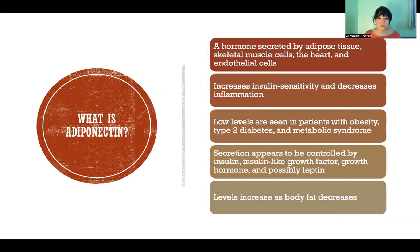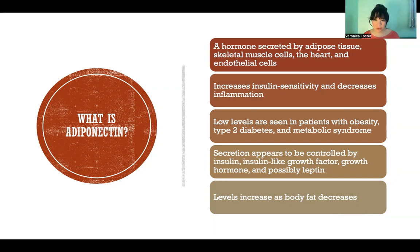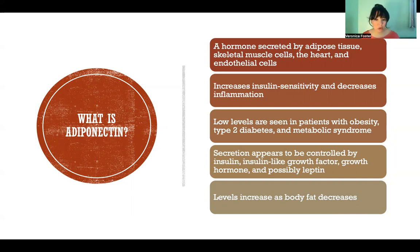The secretion of adiponectin appears to be controlled by several different hormones. This is an active area of research — we don't know everything about this hormone yet, and there's still a lot to be learned. So far, it appears that it is controlled by our secretion of insulin, insulin-like growth factor, growth hormone, and maybe even leptin.